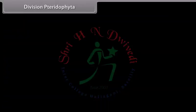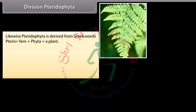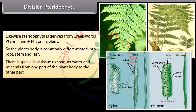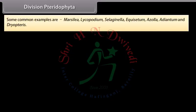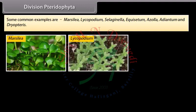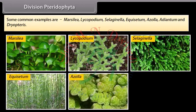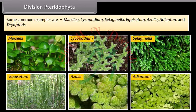Pteridophyta is derived from Greek words 'pteris' meaning fern, plus 'phyta' meaning a plant. The plant body is commonly differentiated into root, stem, and leaf. There is specialized tissue to conduct water and minerals from one part of the plant body to another. Some common examples are Marsilea, Lycopodium, Selaginella, Equisetum, Azolla, Adiantum, and Dryopteris.